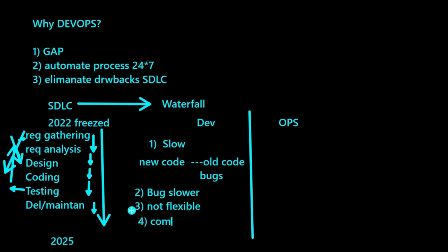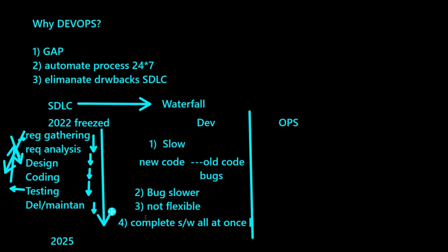The complete software is delivered all at once after three years — there is no incremental delivery in between. By that time, the client might not need those requirements at all. Similarly, the ops team also faces challenges because the methodology is slow; they need to maintain servers for longer durations. Maintaining servers for longer durations without any automation, manually, is also a challenging task. Servers should be up and running for longer durations, and monitoring such a huge infrastructure manually is also a challenge.